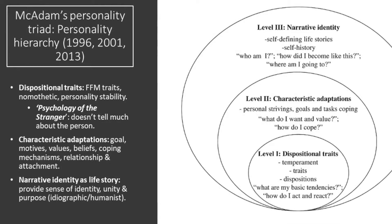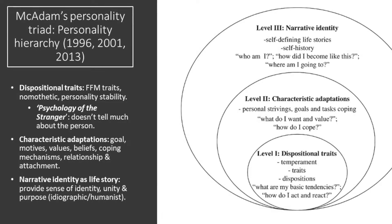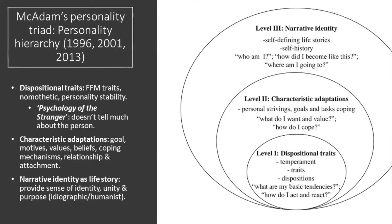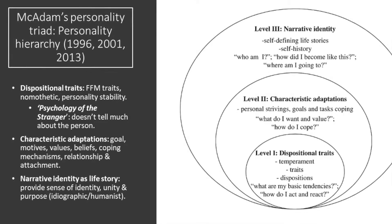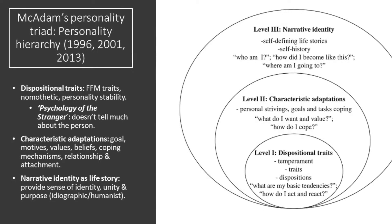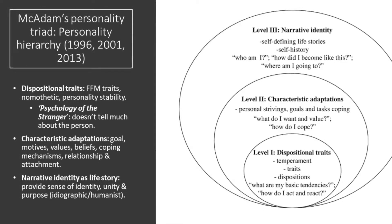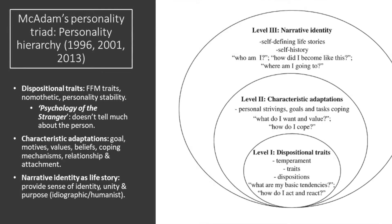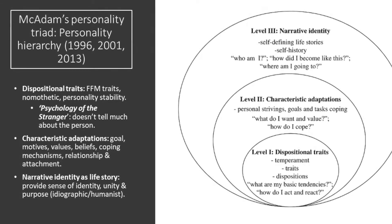For example, there are dispositional traits, which include the five-factor model traits, the nomothetic approach, personality stability, and so forth. Basically, this is the so-called 'psychology of the stranger,' where psychologists don't tell much about the person still — as in you don't exactly know them individually, despite knowing their personality traits on a general level.